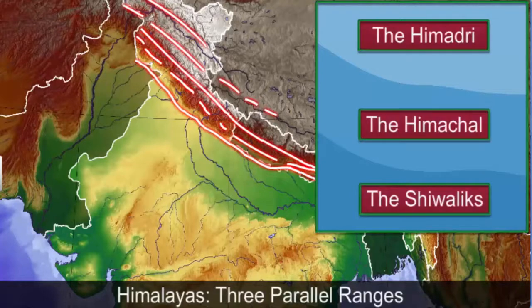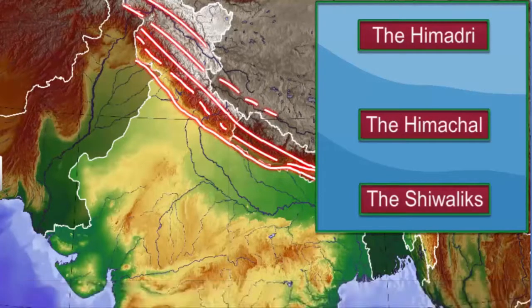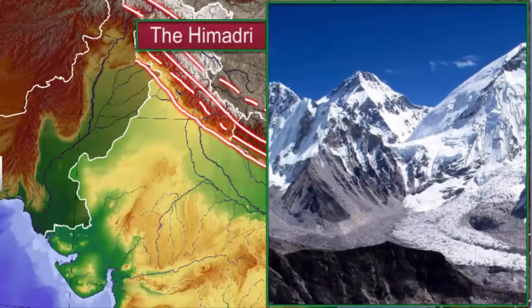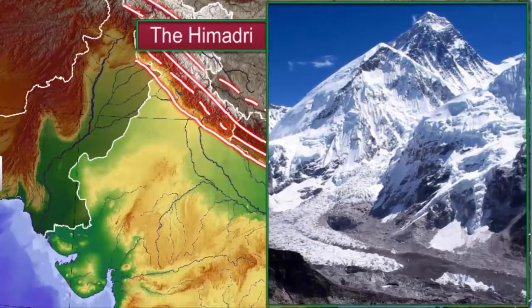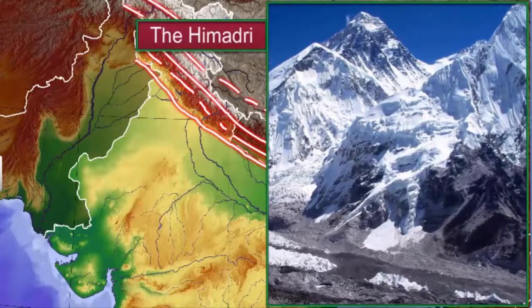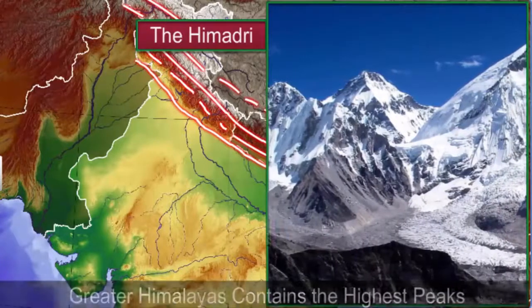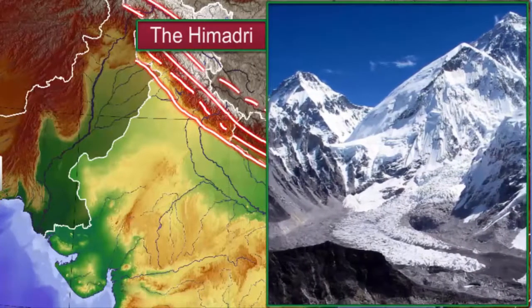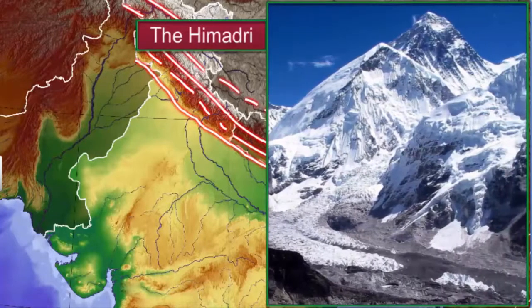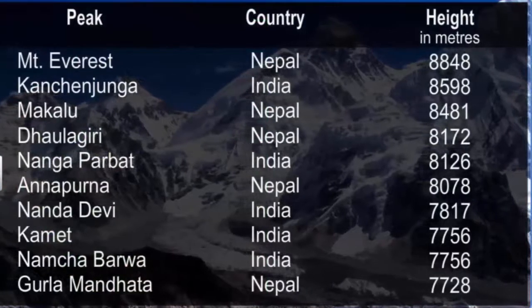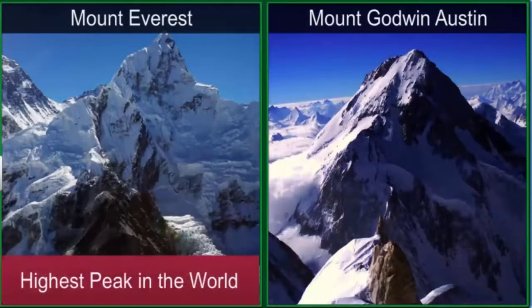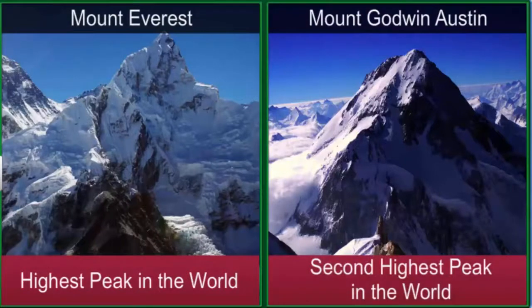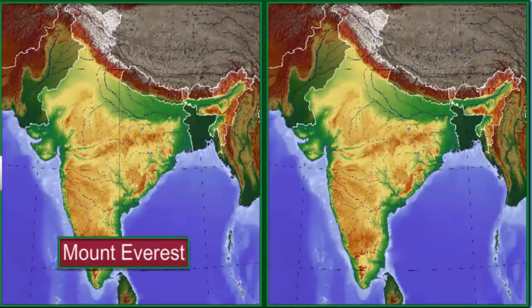The Himadri, also called the Great or Inner Himalayas, is the northernmost range. It is a single unbroken line with the highest peaks, averaging 6,000 meters. Important peaks like Mount Everest, the highest peak in the world, and Mount Godwin-Austin, the second highest peak, are all part of this range. Mount Everest is located in Nepal, while Mount Godwin-Austin is in Ladakh, India.